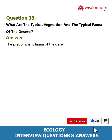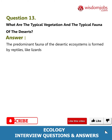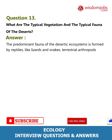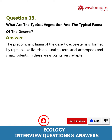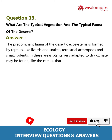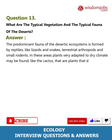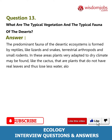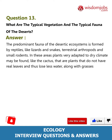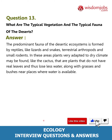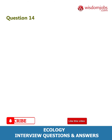Question 13: What are the typical vegetation and the typical fauna of the deserts? The predominant fauna of desertic ecosystems is formed by reptiles like lizards and snakes, terrestrial arthropods, and small rodents. Plants very adapted to dry climate may be found, like cacti, which do not have real leaves and thus lose less water, along with grasses and bushes near places where water is available.